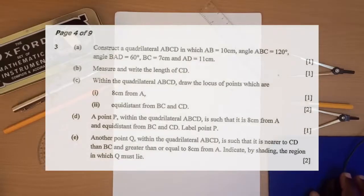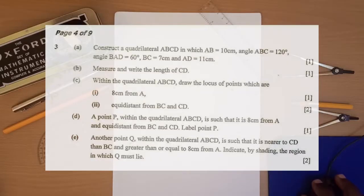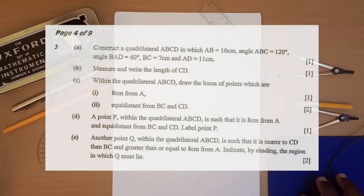The first part of this question says: construct a quadrilateral ABCD in which AB is equal to 10 cm, angle ABC is equal to 120 degrees, and angle BAD is equal to 60 degrees. BC is equal to 7 cm and AD is equal to 11 cm. The second part says: measure and write the length of CD.